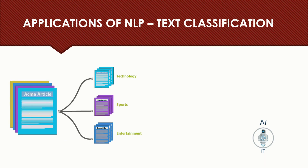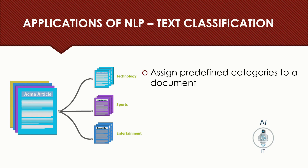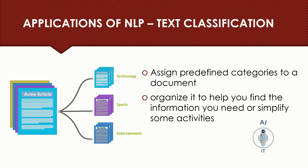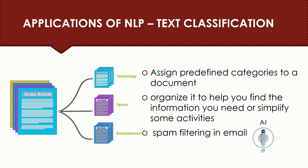The third application is text classification. When you have a lot of text, it is difficult to categorize it into different categories — artificial intelligence helps us in categorizing a document. You can assign predefined categories to specific or multiple documents, which helps find the information one needs or simplify certain activities. A simple example is email filters: when you receive a mail, certain mails are automatically classified into different folders — probably spam, an important mail, or a personal mail — using text classification.